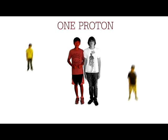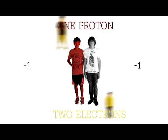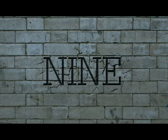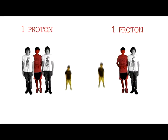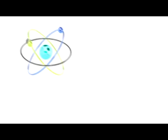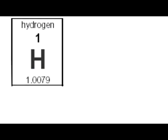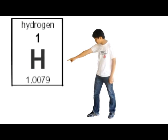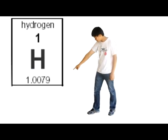An atom that does not have an equal amount of protons and electrons is charged and called an ion. Atoms of the same element but with a different number of neutrons are called isotopes. Atoms are classified by atomic number, mass number, and atomic mass.